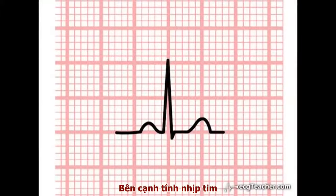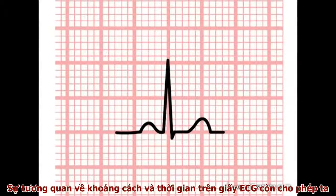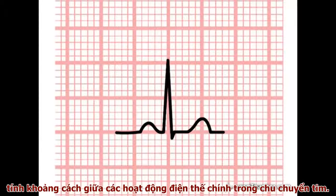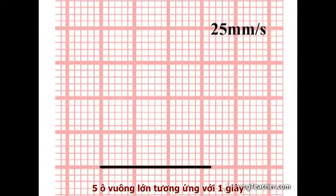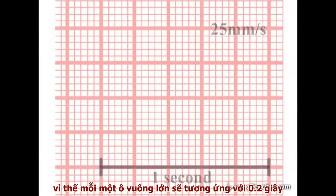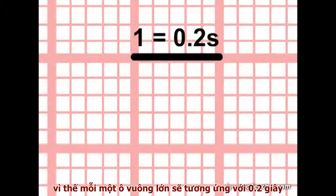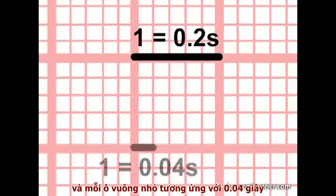In addition to calculating heart rate, the fact that distance on the ECG paper equates to time allows us to use the readout to time the duration of the major events of the cardiac cycle. At a standard recording speed of 25 mm per second, five large squares corresponds to one second. Therefore one large square corresponds to one fifth of a second, and one small square to 0.04 seconds.